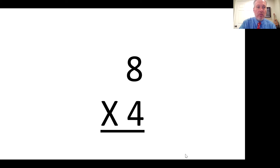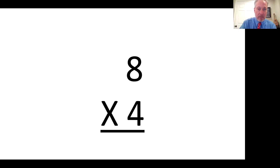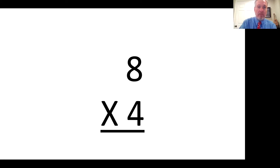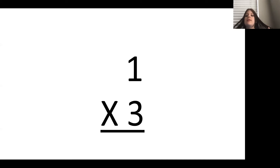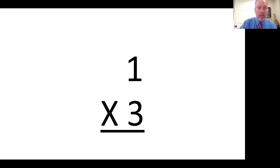Good. What's the answer to this one? 3. Good, this one? 32. Say the whole thing, please. 8 times 4 is 32. Very good, this one? 3. Good, this one? 2 — now 4. Okay, we'll come back then. What's this one, please?